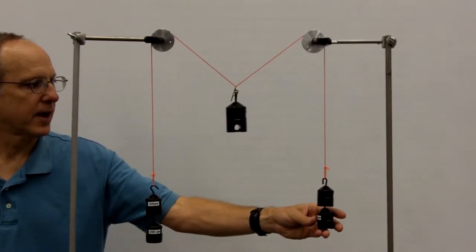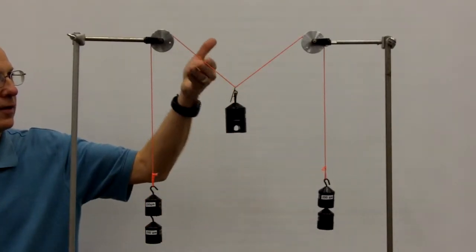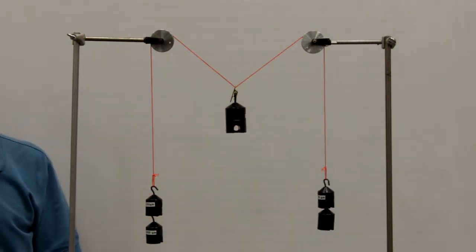And in particular, if I make the masses on both sides equal, then we can see that the V shape here is symmetric, both left and right.